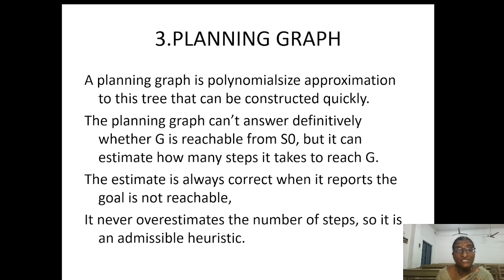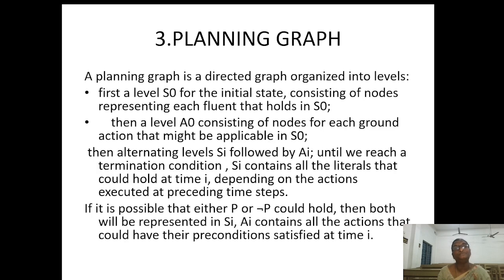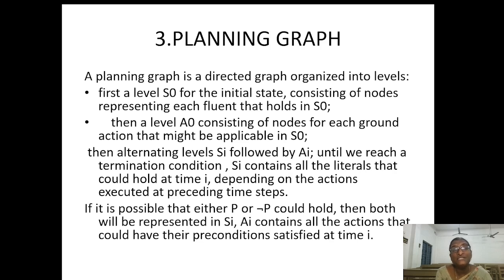Because it does not overestimate the number of steps, we call it an admissible heuristic. The planning graph is a directed graph organized into levels. The first level, S0, is the initial state, consisting of nodes representing each fluent that holds in the initial state — those things that should be true are represented as a conjunction of literals or fluents.